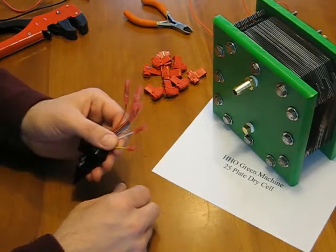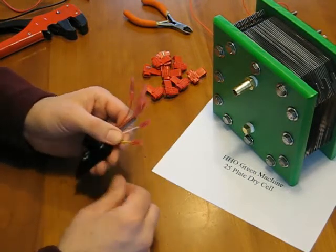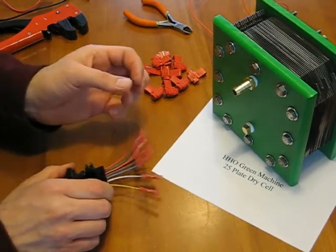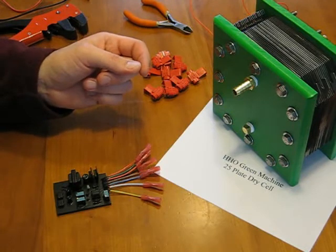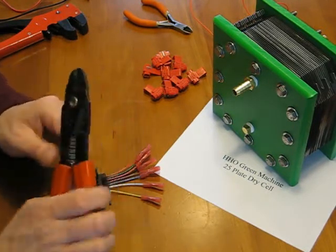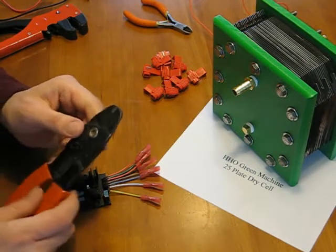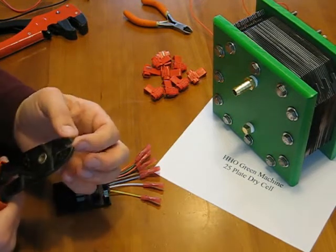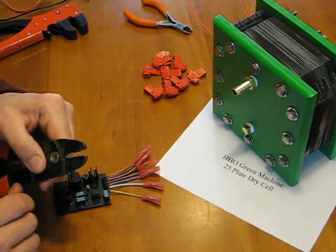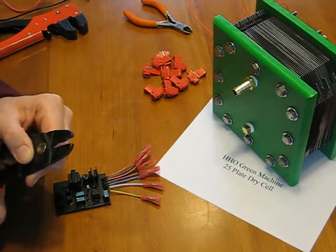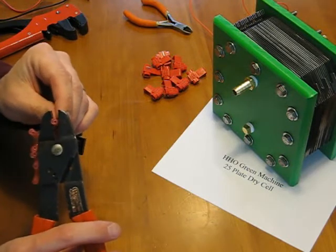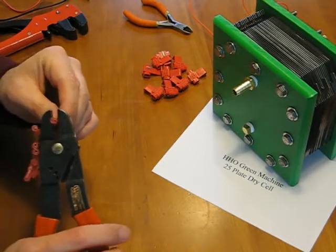I install these crimp connectors because they're very good. They make a good connection. They're easy to use, easy to install. You don't need to solder anything. And most wire strippers here have in the front wire nippers or cutters, and then there are two little notches which are used for crimps. And these can be used to crimp this crimp connector closed on top of the wire.